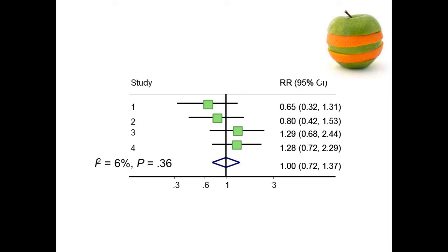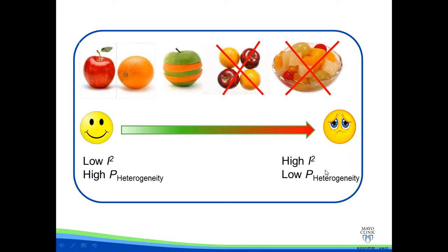In summary on heterogeneity: it's a spectrum. On one side — low I-squared, high p-value for heterogeneity — we're happy and trust the meta-analysis. On the other side — high I-squared, low p-value for heterogeneity — we're unhappy and wouldn't trust the meta-analysis as much.